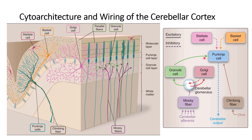That information is sent to the Purkinje cells. However, the Purkinje cells are normally inhibited by the stellate and basket cells in the molecular layer. The Purkinje cells also have inhibitory output to the deep cerebellar nuclei. But when climbing fibers are excited, they activate the Purkinje cells directly.